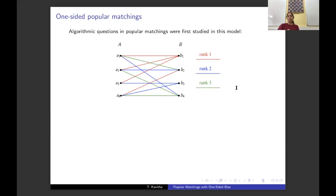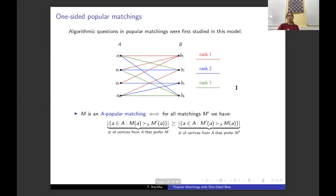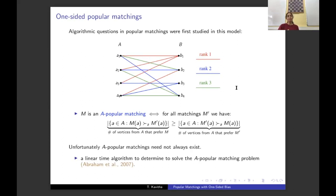An instance in the one-sided model has every edge assigned a unique rank — the rank its left endpoint assigns to its right endpoint. The red edges are rank 1, blue edges are rank 2, and green edges are rank 3. The definition of an A-popular matching is analogous to that of a popular matching, but only vertices in A count. Unlike popular matchings, A-popular matchings need not always exist. The first algorithmic question was to decide if a given instance admits an A-popular matching, and a linear time algorithm was shown for this problem.